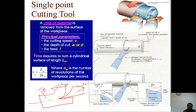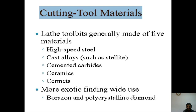Now coming to cutting tool materials — we have different types of cutting tools. The tool material should be harder compared to the workpiece material; only then can material be easily removed from the workpiece. A lathe tool bit is generally made from five materials: high carbon steel, high speed steel, cast alloys such as stellite, cemented carbide, and ceramics.